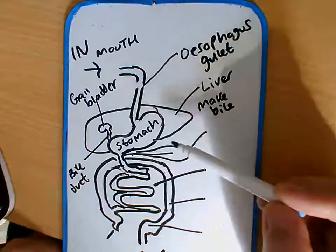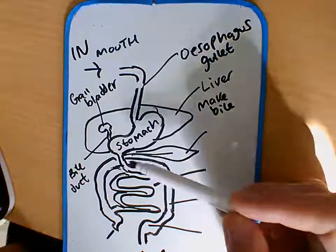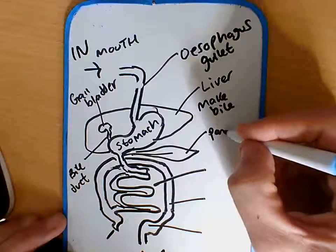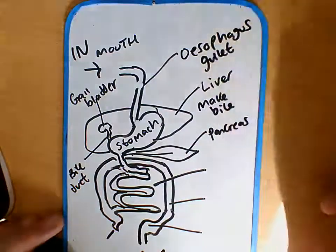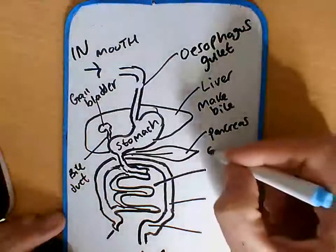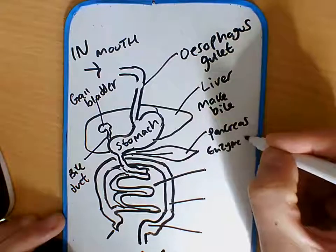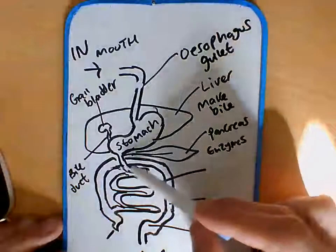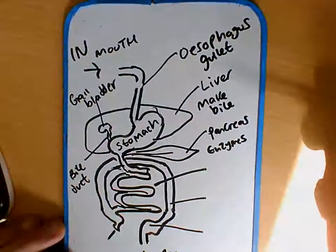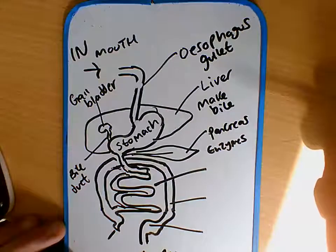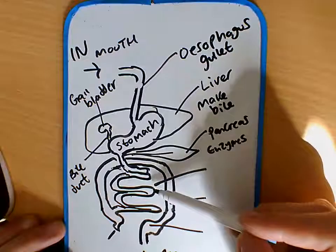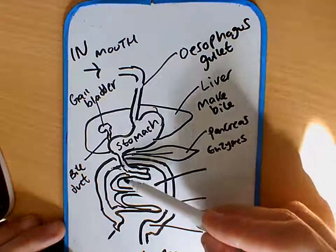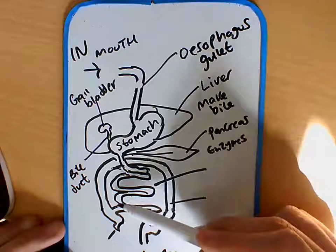This structure here, which looks a little bit like a leaf, is called the pancreas. The pancreas's job is to make lots and lots of enzymes — it's essentially an enzyme factory — and they get added into the system as well. We then move from the stomach into the inner chamber here.